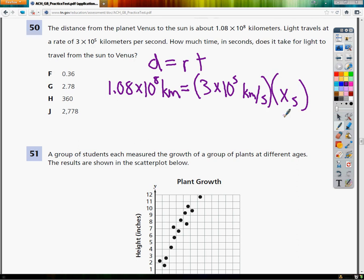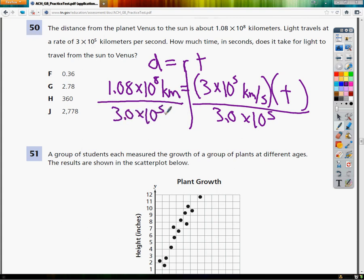So it's just like solving an equation. You draw your line. And let me mark this out and make it look like a T. So I just divide by 3.0 times 10 to the 5th. Same thing here. And that gives me T.